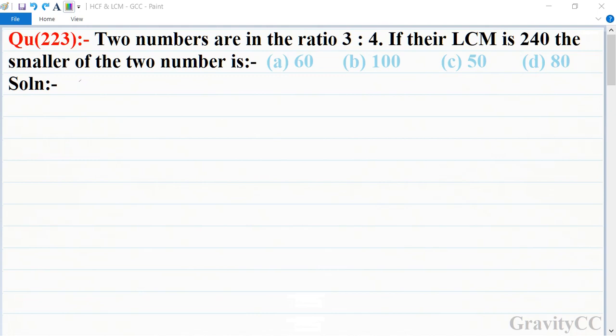Quantitative aptitude, chapter HCF and LCM, question number 223: Two numbers are in the ratio 3:4. If their LCM is 240, the smaller of the two numbers is which option? First, we let the